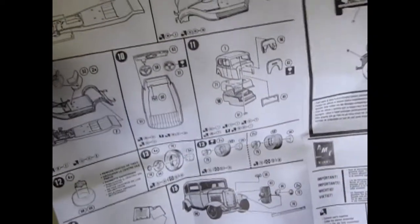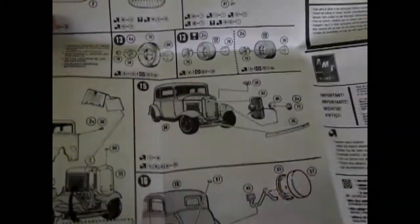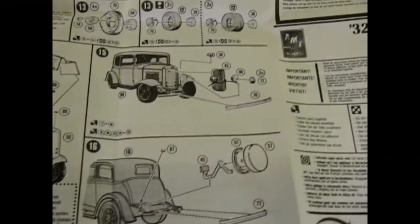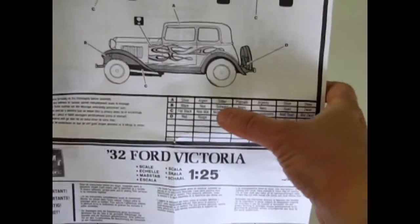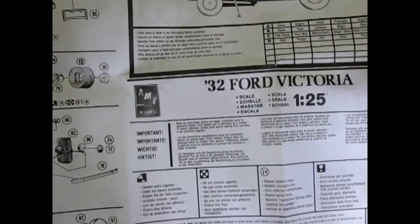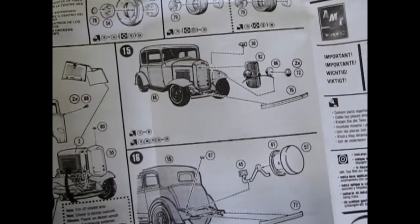But what makes it different, of course, is the Victoria body style, which is a really nice two-door type of sedan. As well, you get the color call-outs, which they don't actually have the letters where they are, like in a Revell kit on this one.